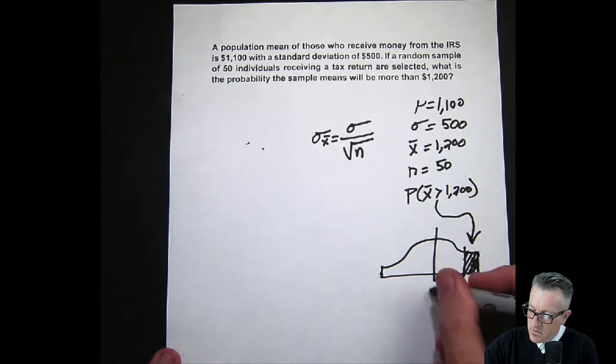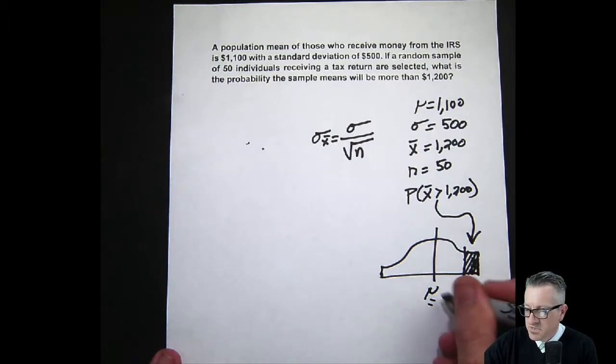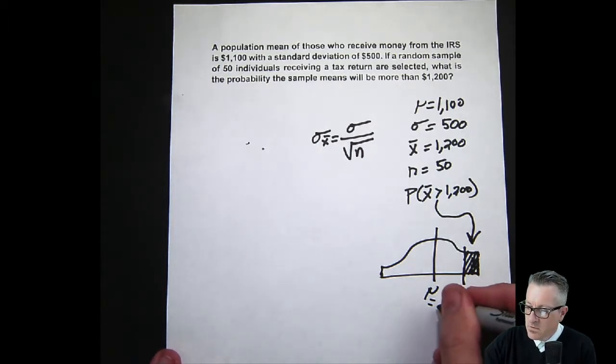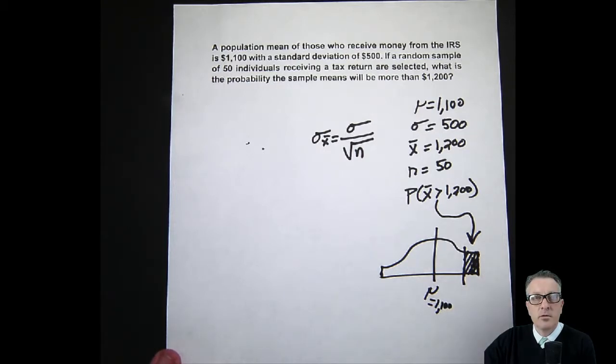I always write the μ in here - it kind of gives us the perspective of the whole problem. So our μ is 1100.